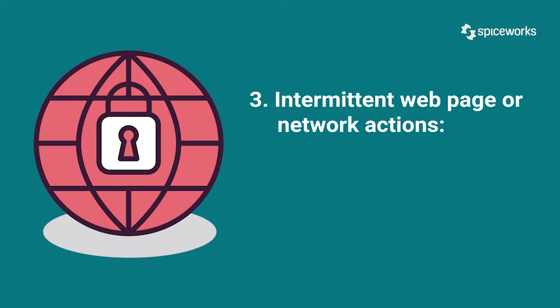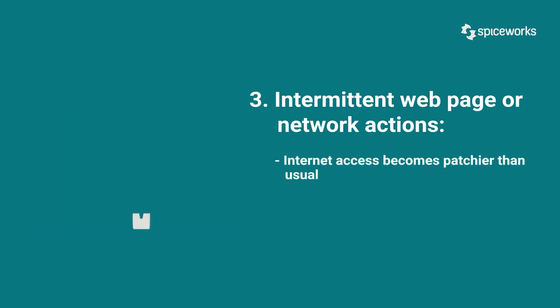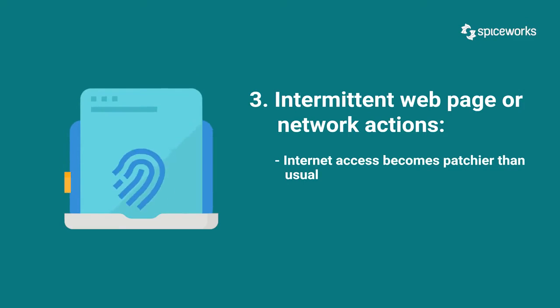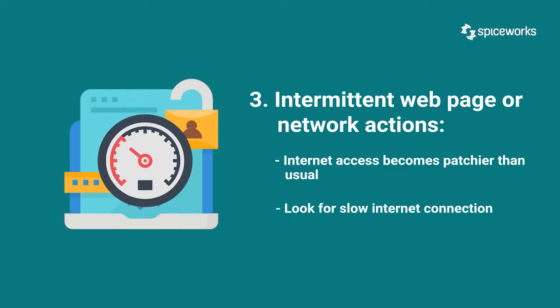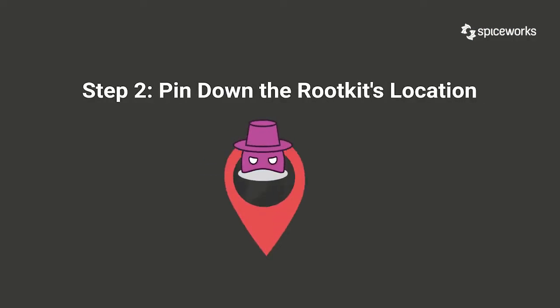There may be grounds for alarm if something appears different, such as an additional program running when booting a device. Number three: intermittent web page or network actions. It could be more than just a service issue if your internet access becomes patchier than usual. If a hacker uses a rootkit to transmit or receive a large amount of data from your computer, it may cause your connection to slow down.